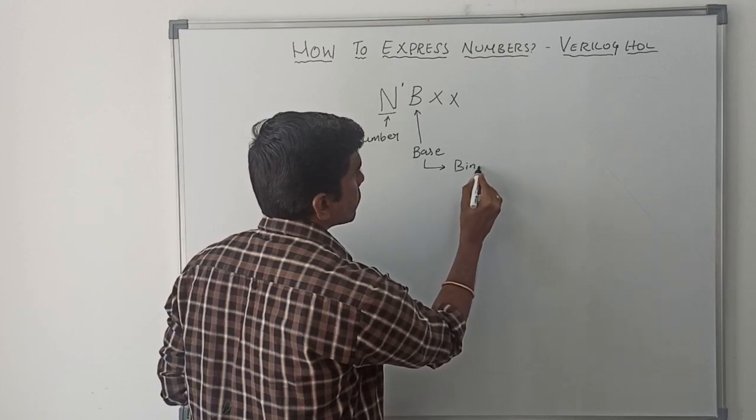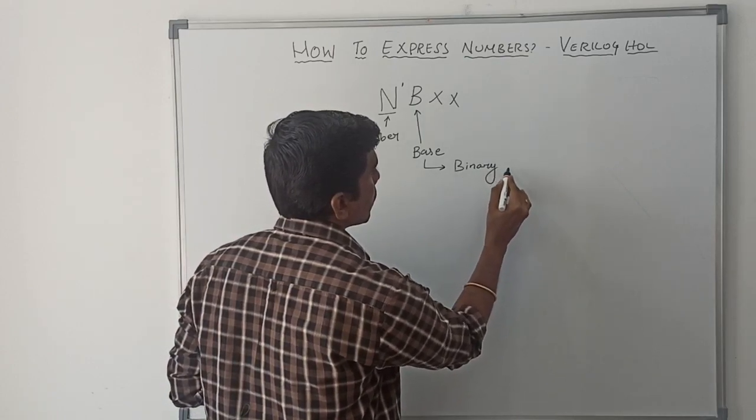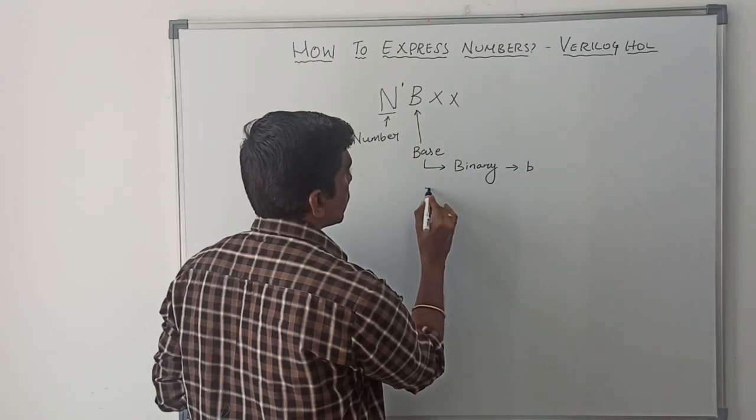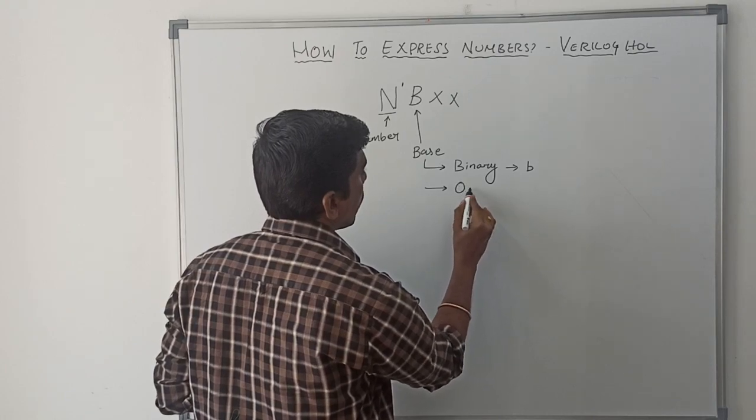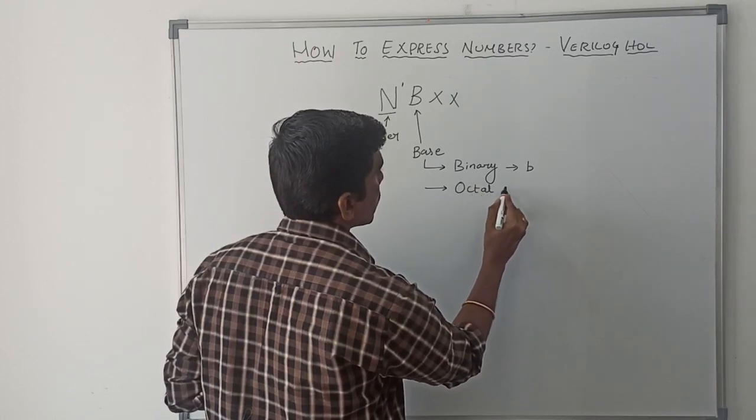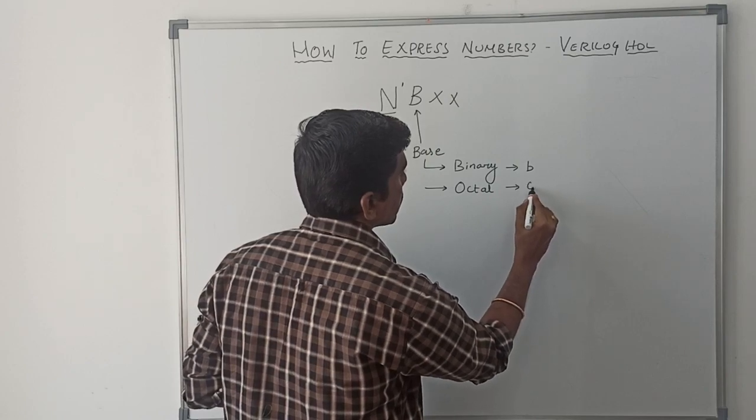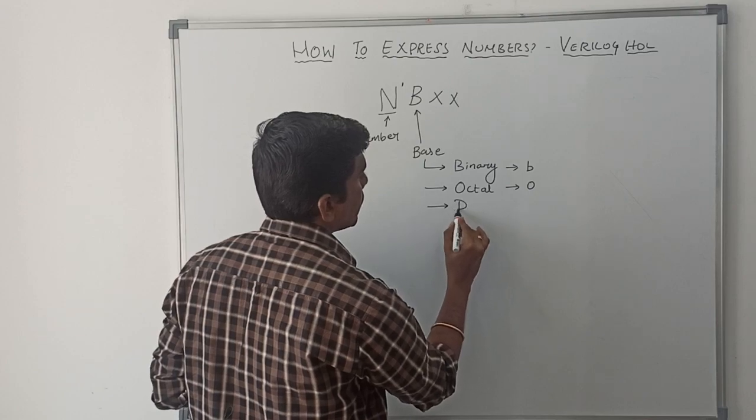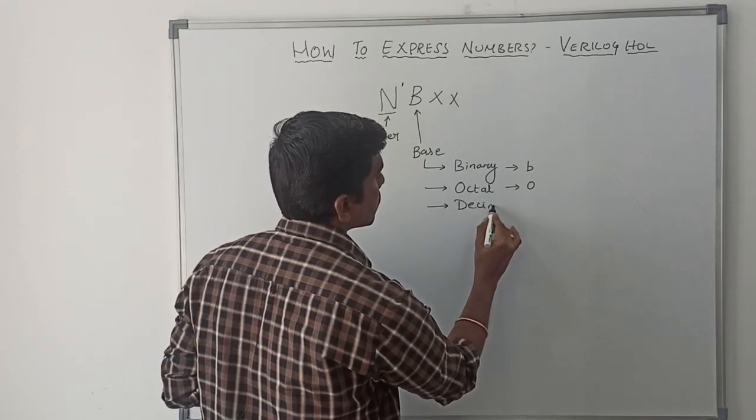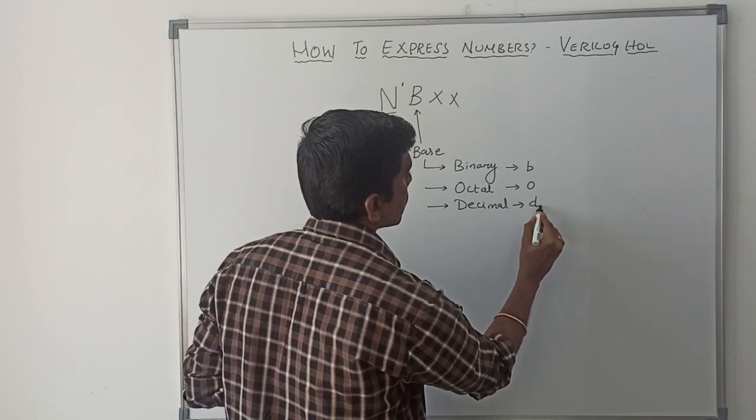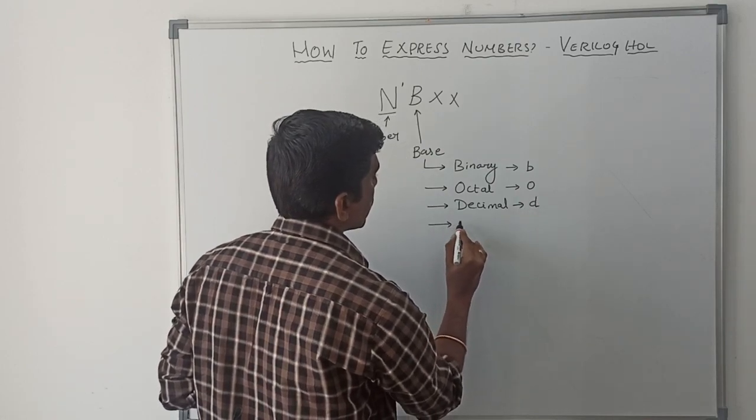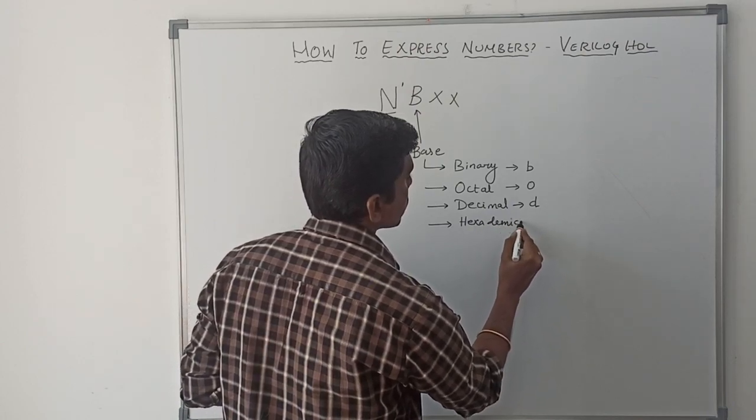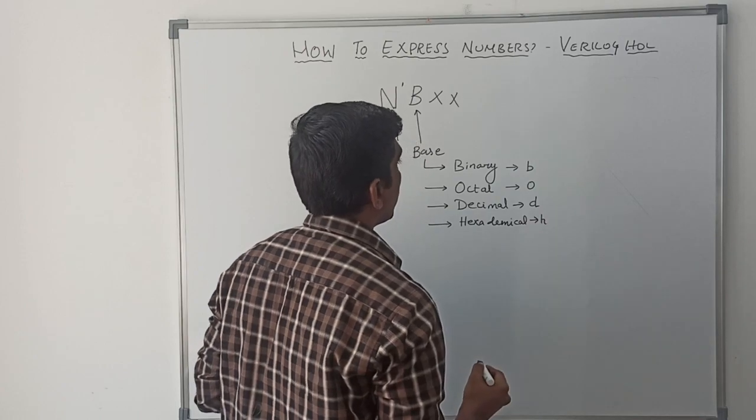First one is binary. This binary represents with the letter B. Then second one, octal. This octal represents the letter O. Next one, decimal. This represents small d. Next one, hexadecimal. This represents small h.